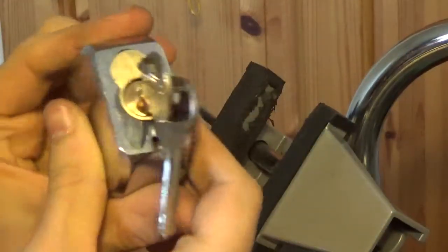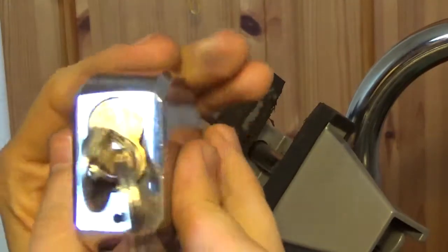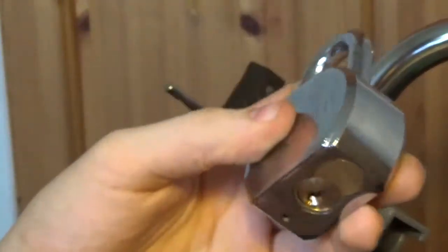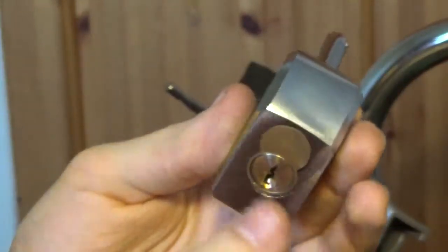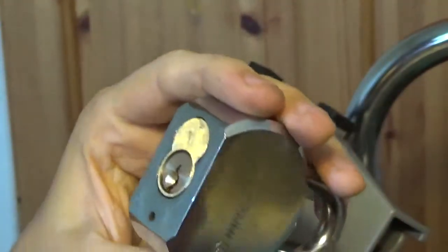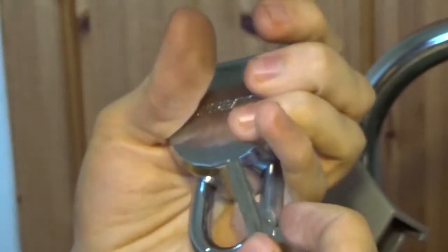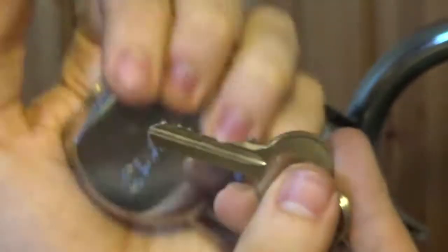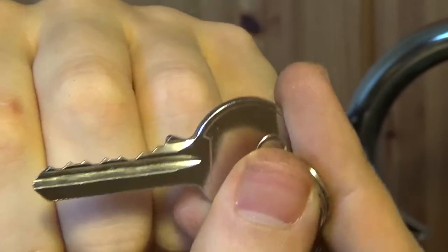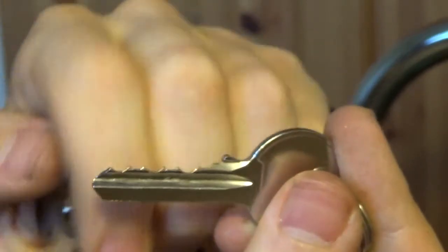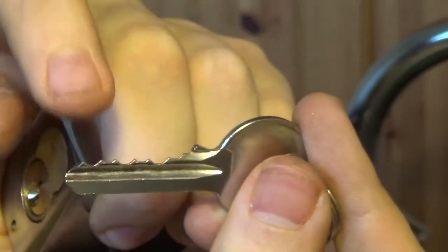It has a core like this and you can actually take that core out, which I will do in a short while. I'll just pick this first. Not much of a key there. The key bitting is actually five pins.